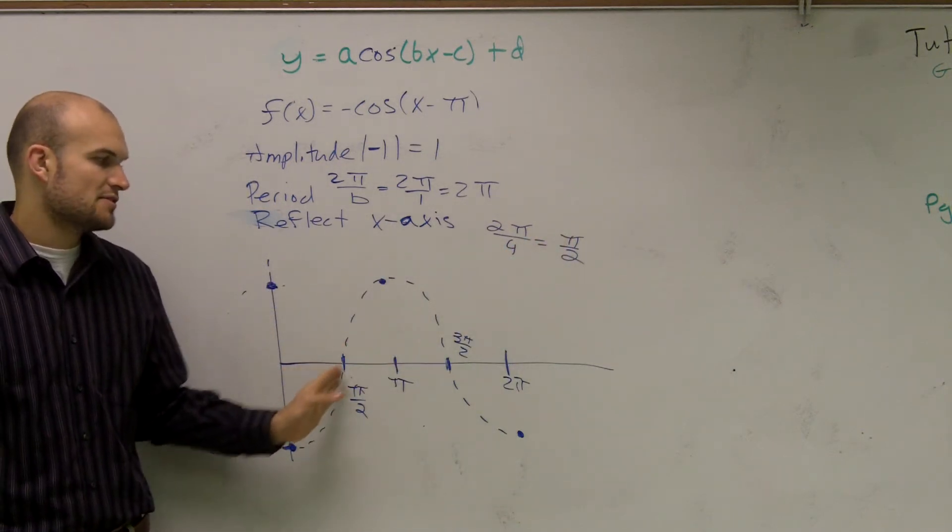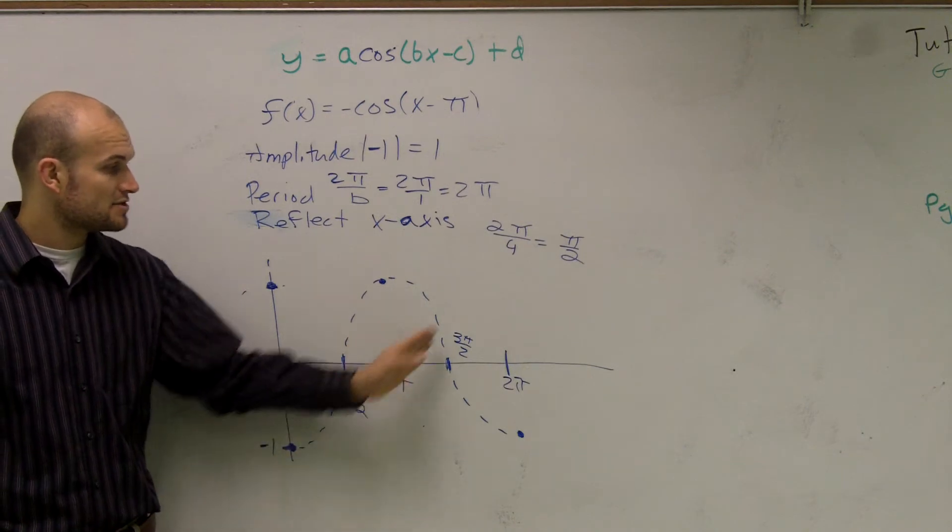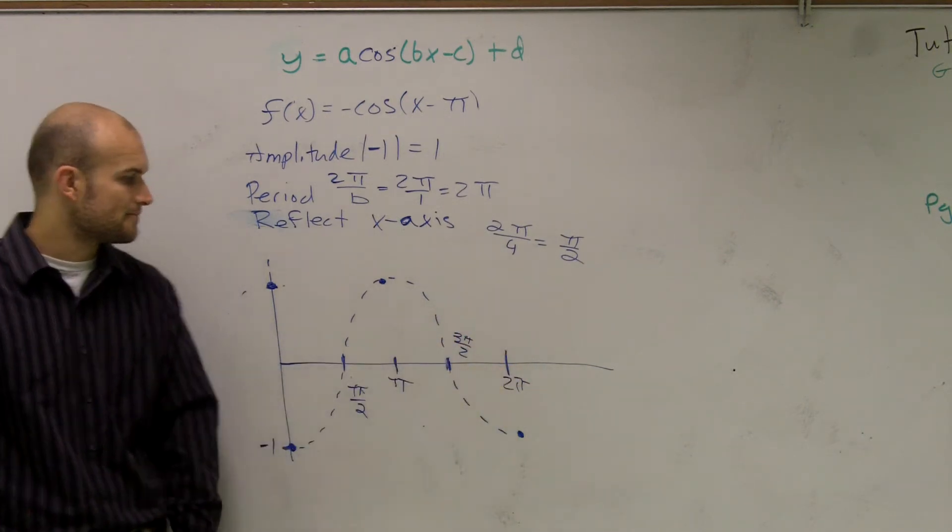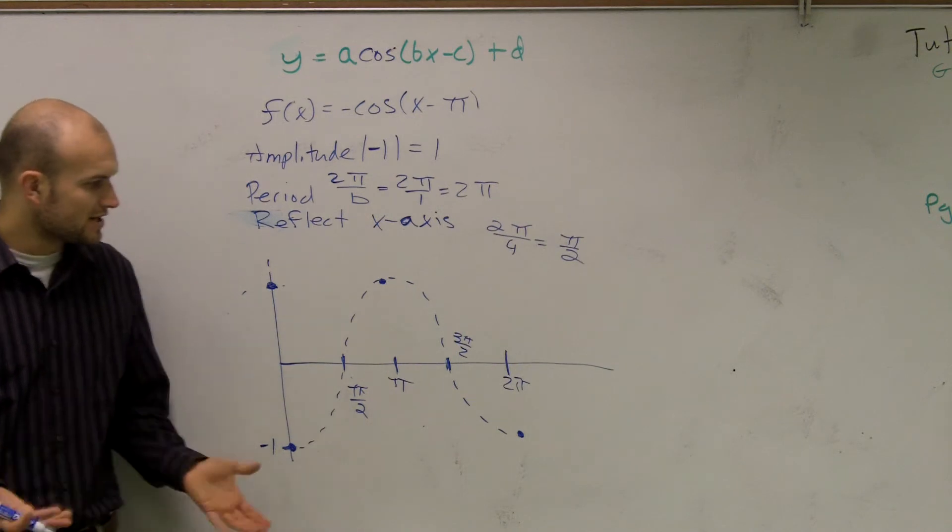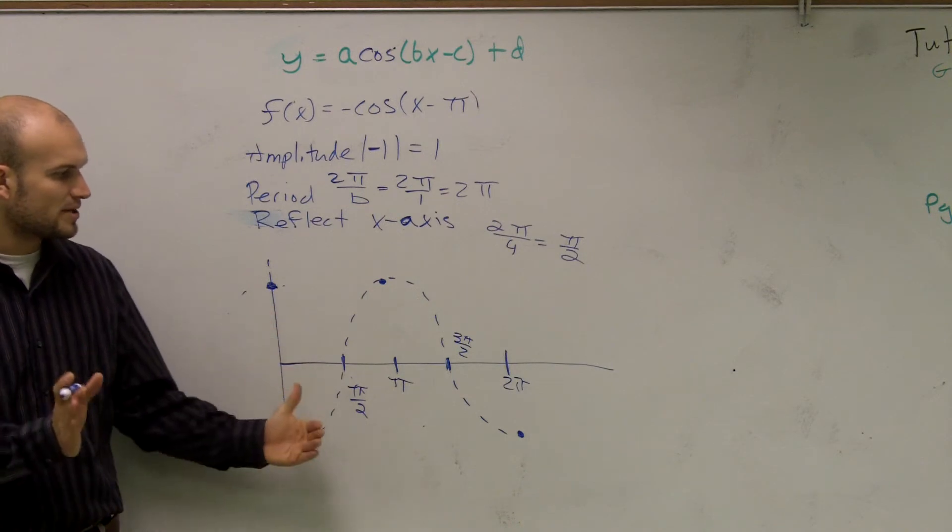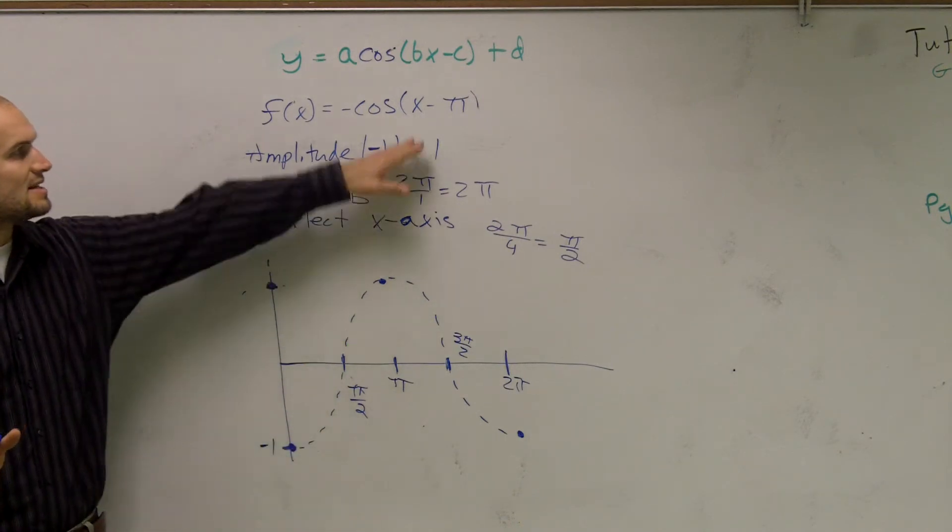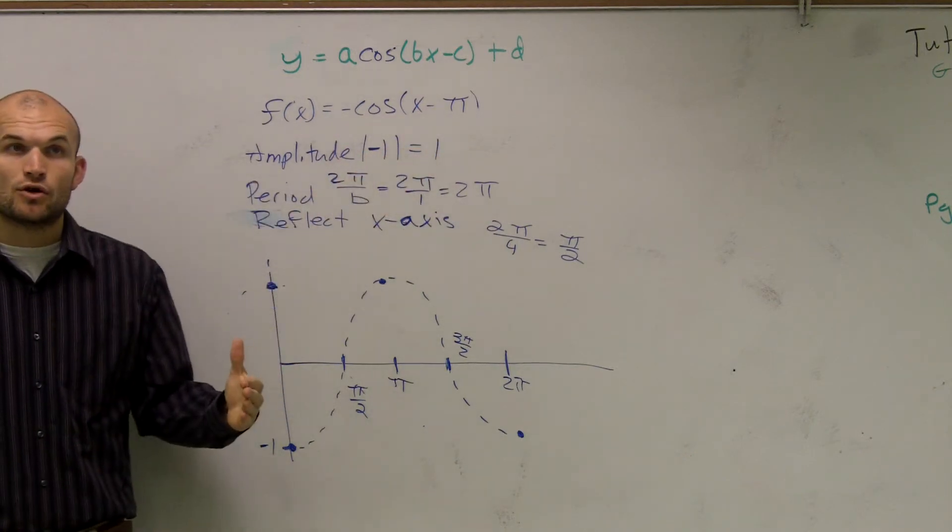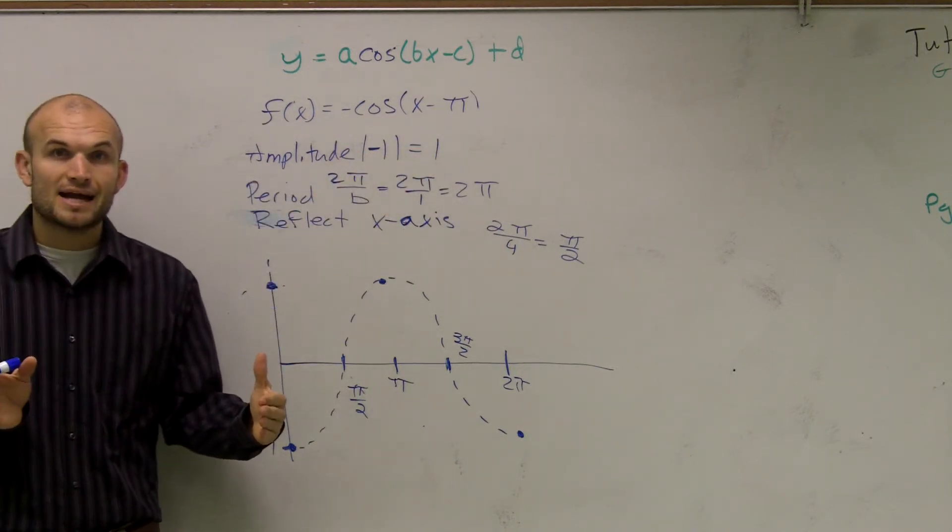π plus π over 2 is 3π over 2. 3π over 2 plus π over 2 is 2π. So if you guys look at this now, here's my graph, right? Here's what my paragraph would have, or at least the first period of my paragraph. It says x minus π. So that's going to tell me I'm going to shift my whole graph π units to the right.